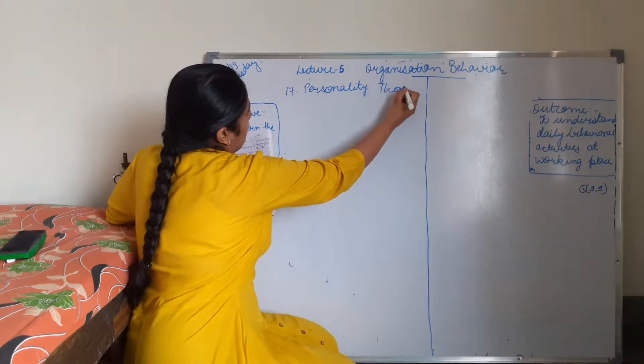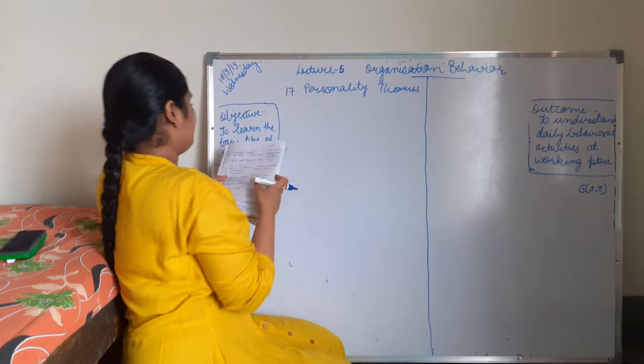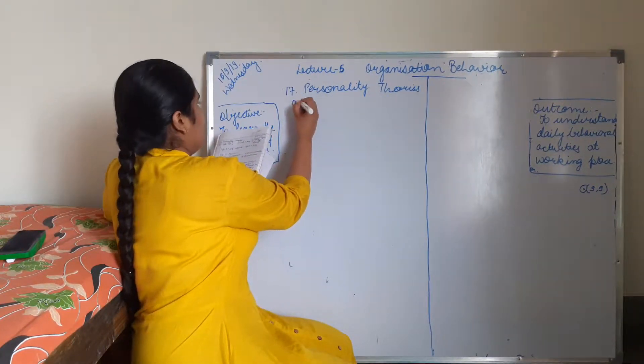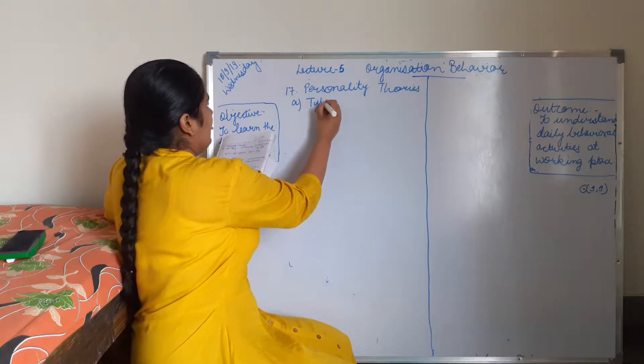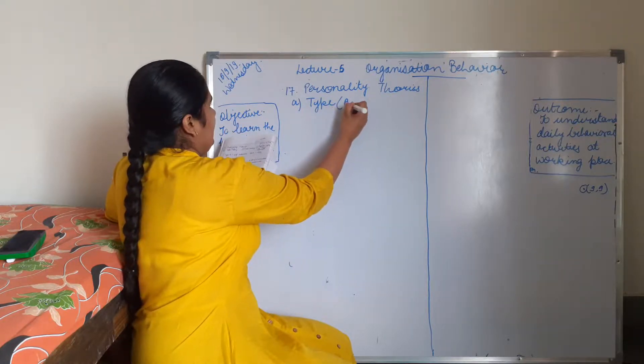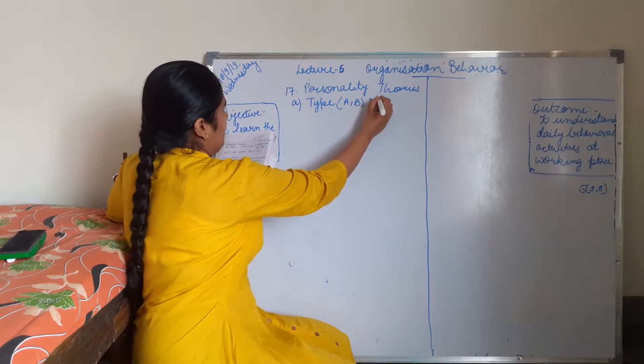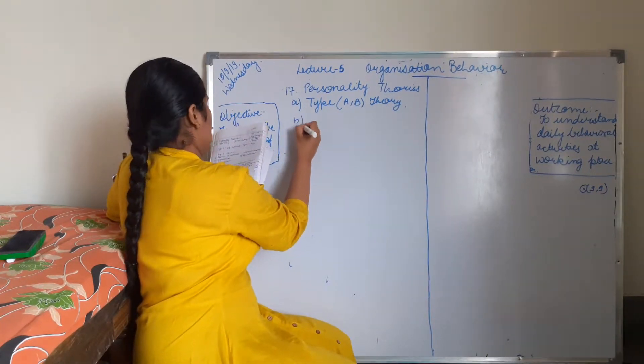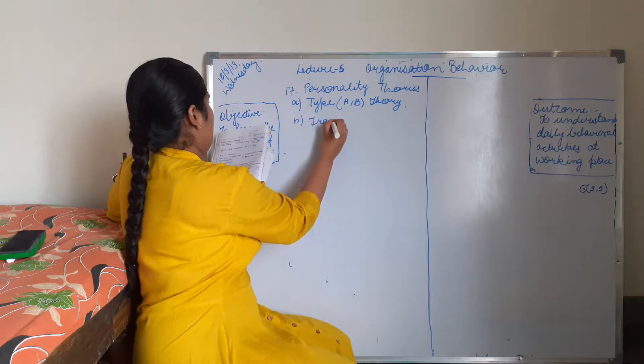Personality Theories: A is Type A B Theory, and B is Trait Theory.